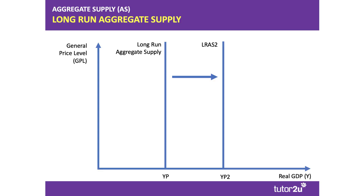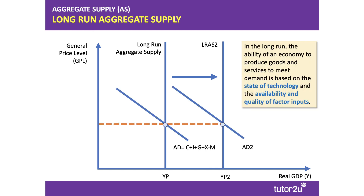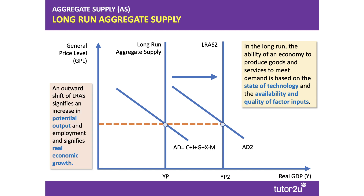Long-run growth — quick reminder if you're using the neoclassical model — is an outward shift of the long-run aggregate supply curve to LRAS2. That allows the economy to operate with a higher level of demand; you can keep the price level the same if you shift out your aggregate supply curve. In the long run, the ability of an economy to supply goods and services to meet demand is based on the state of technology and the availability and quality of factor inputs. Shifting out that curve increases potential output, increases employment, and represents real economic growth.